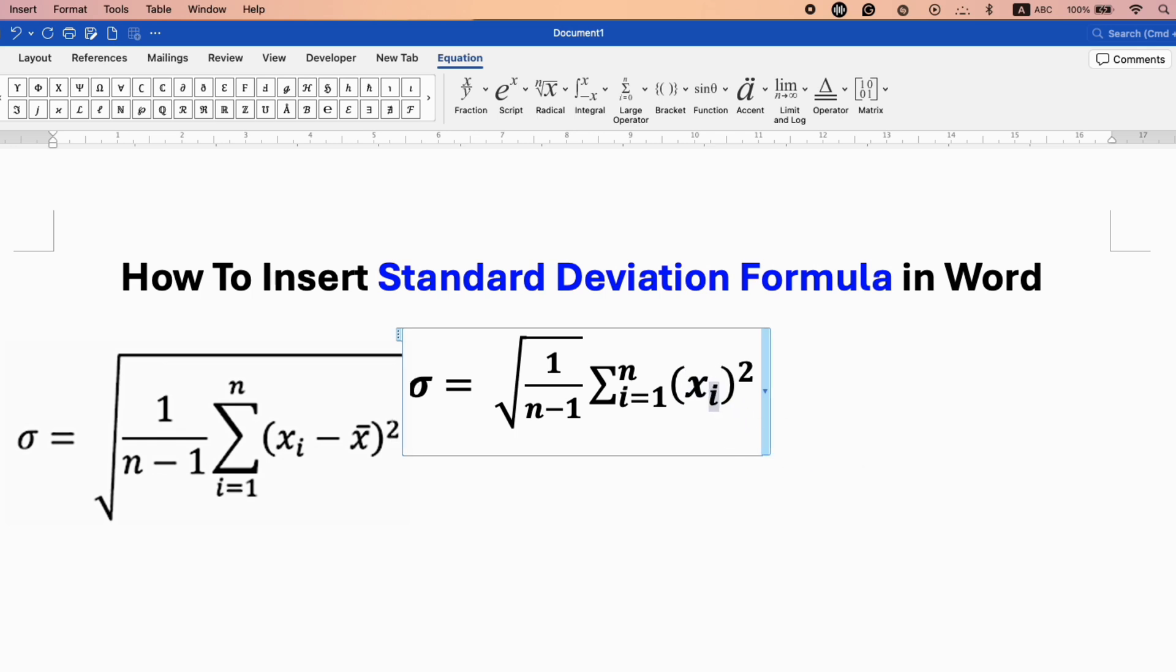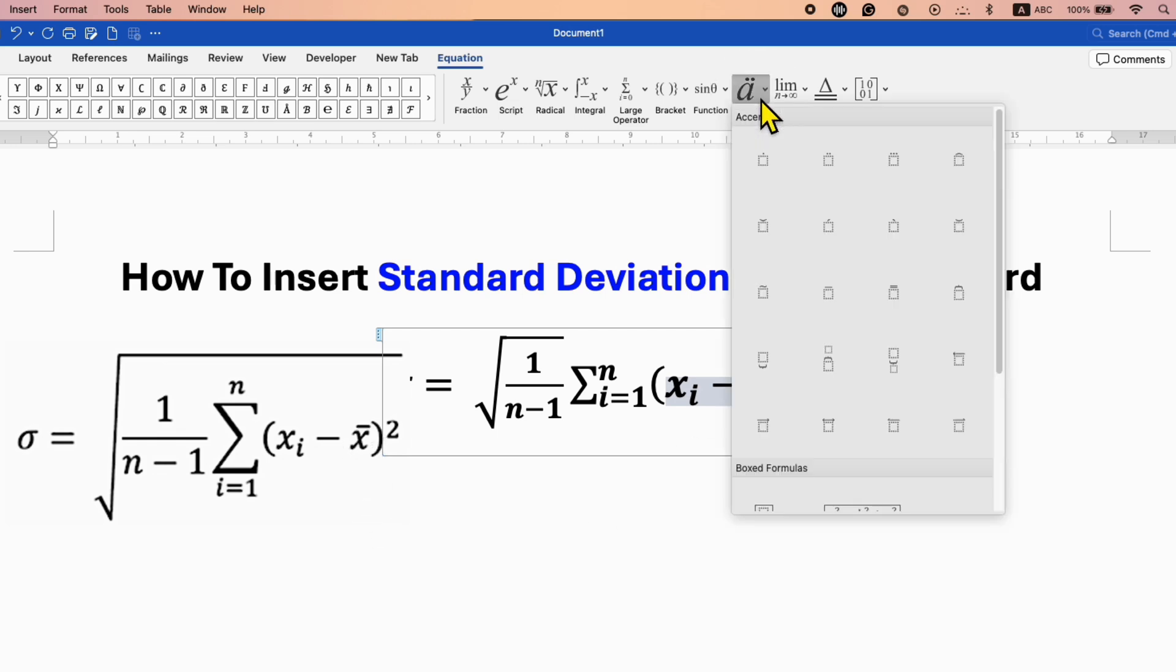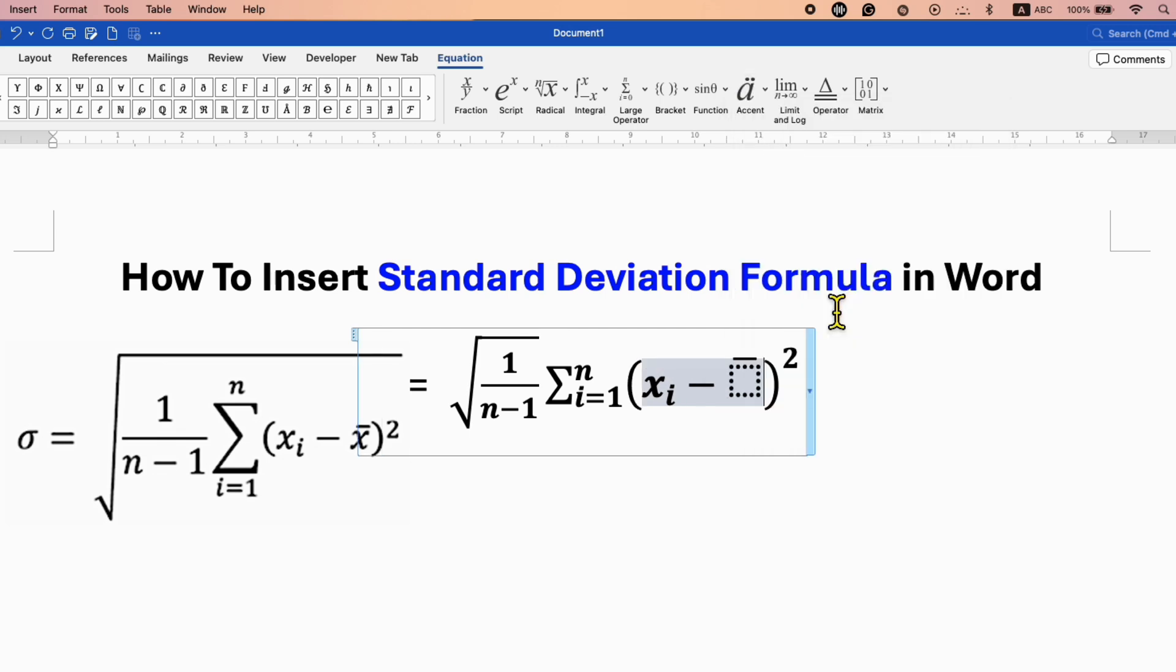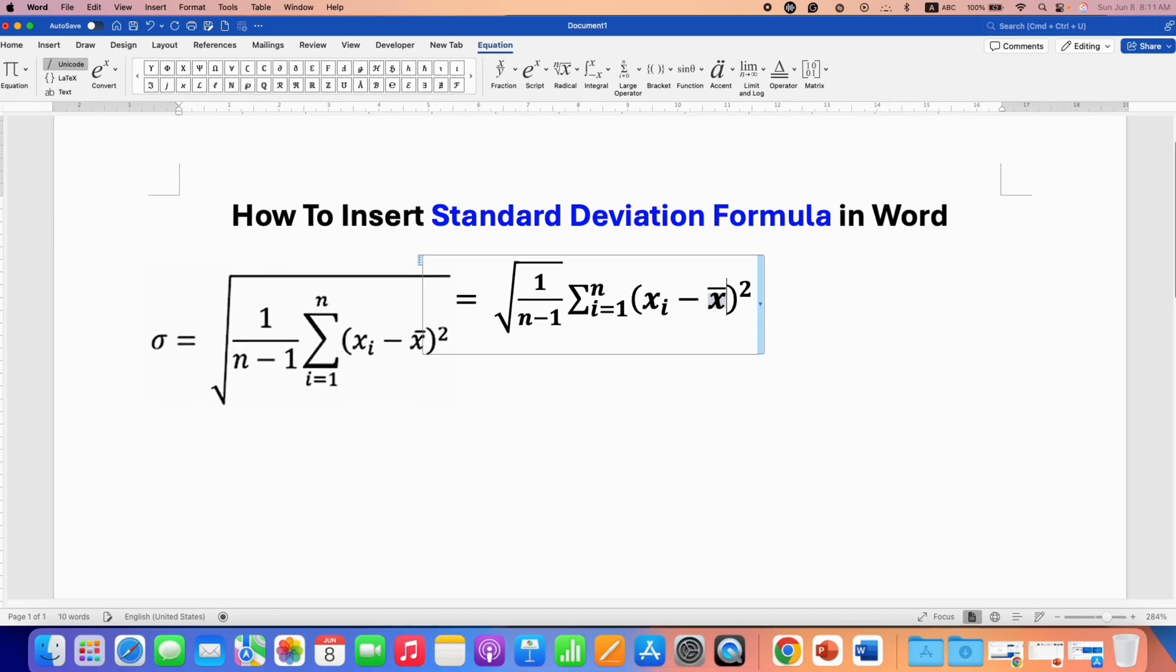Now press forward arrow key on your keyboard and type minus. Now we need x with the bar. Click on the Accent option and select bar. And then type x inside the box.